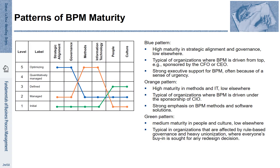It is interesting to observe that in practice we see different patterns in how BPM maturity develops in companies. The first is the blue pattern: companies that have high maturity in terms of strategic alignment and governance, but are less developed in terms of methods, technology, people, and culture. This is usually the case when BPM is driven top-down by top management.